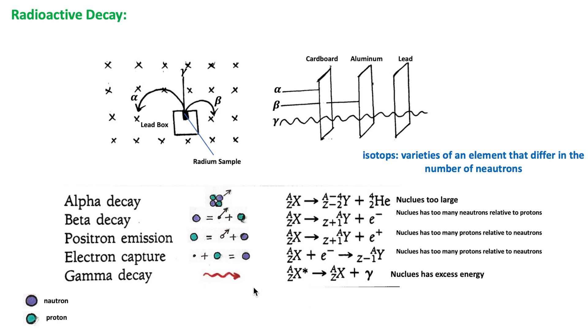For gamma decay, the reason for the instability is that the nucleus has excess energy. The emission of gamma rays will reduce the energy of the nucleus.